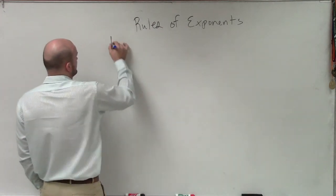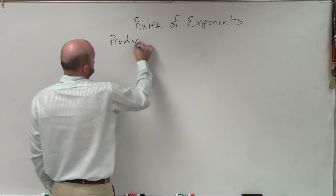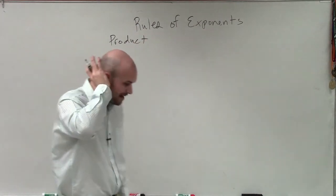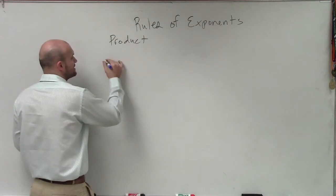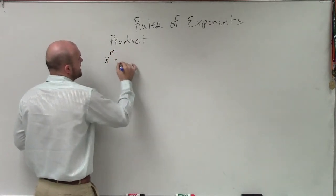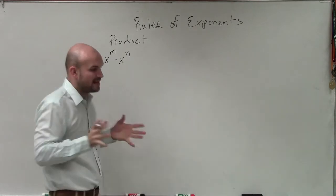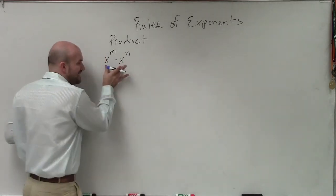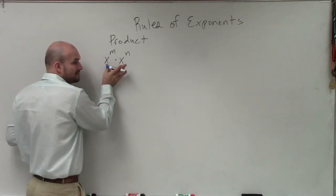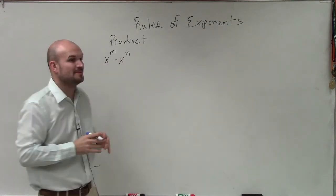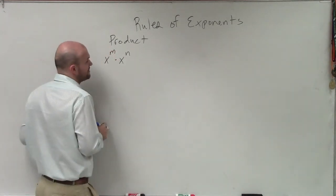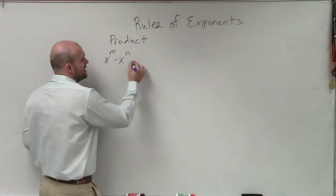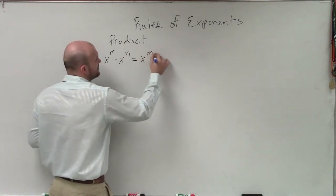So the first one is, remember, the properties of exponents are going to deal first with the product. And what the product just states, if I have x to the m times x to the n, the main important thing when applying this property is my bases are exactly the same. My bases have to be exactly the same for me to be able to apply these properties. So x to the m times x to the n, that's going to equal x to the m minus n.